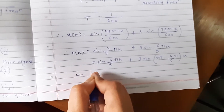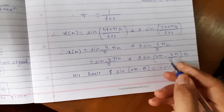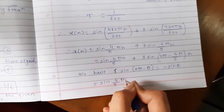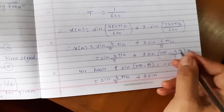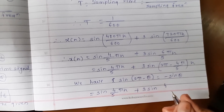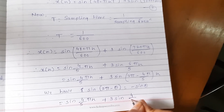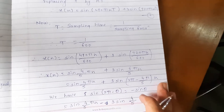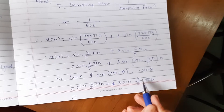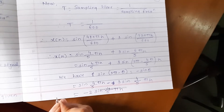We know that sin(2π − θ) = −sin(θ). So sin(6π/5 · n) = sin(2π − 4π/5 · n) = −sin(4π/5 · n). Therefore x(n) = sin(4π/5 · n) + 3·(−sin(4π/5 · n)), which gives x(n) = −2sin(4π/5 · n). This is equation 4.